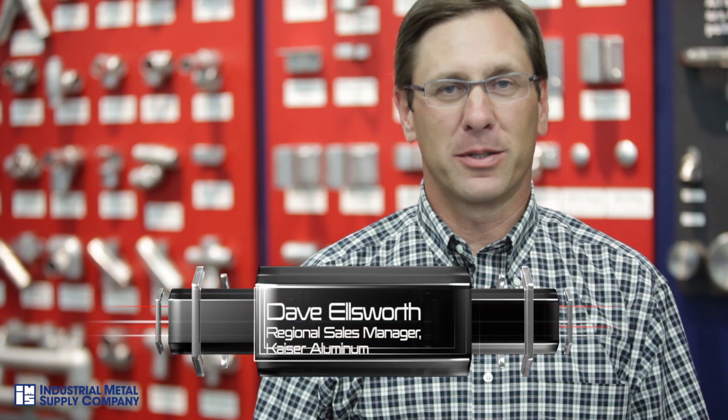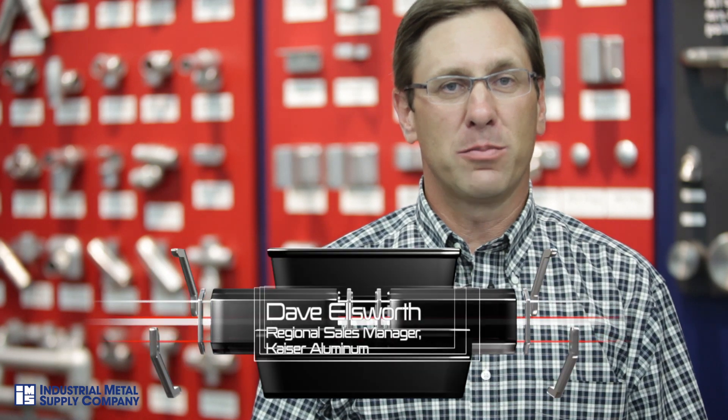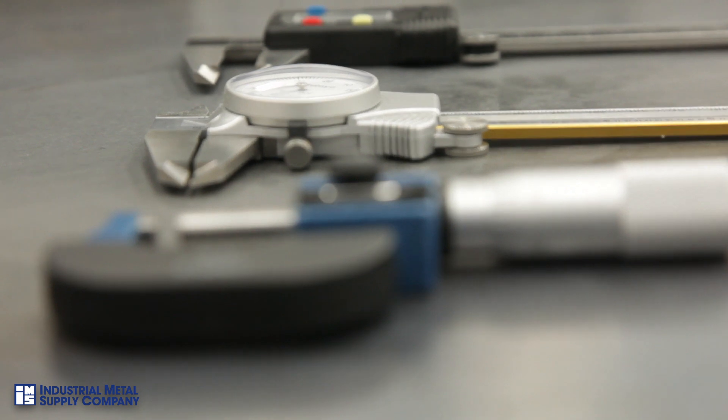Hi, I'm Dave. Today we're going to talk about the proper use of dial calipers, digital calipers, and digital micrometers, which are used to measure the dimensional characteristics of all metals. Today we're going to be talking particularly about aluminum.